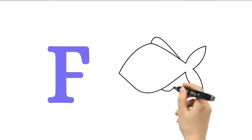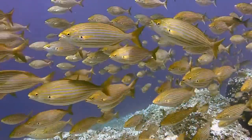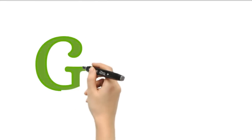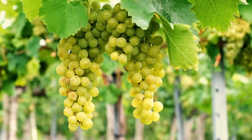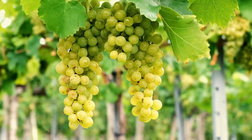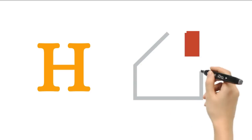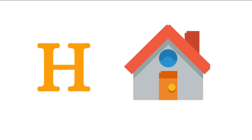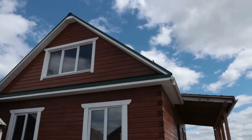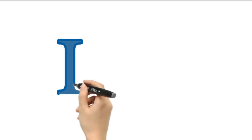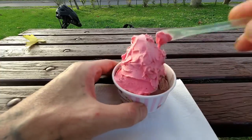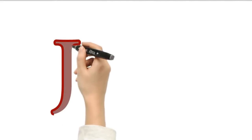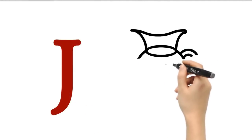F. F for fish. G. G for grapes. H. H for home. I. I for ice cream. J. J for jug.